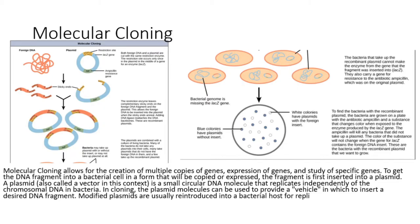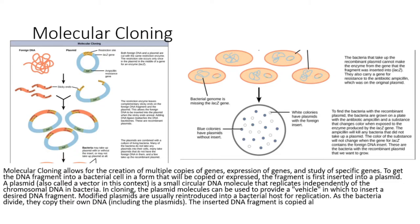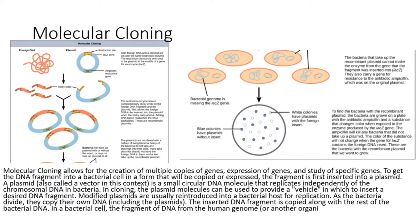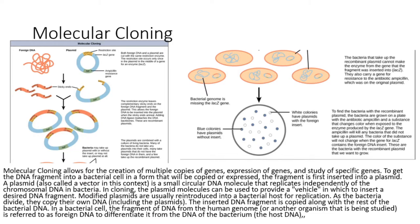A plasmid, also called a vector in this context, is a small circular DNA molecule that replicates independently of the chromosomal DNA in bacteria. In cloning, the plasmid molecules can be used to provide a vehicle in which to insert a desired DNA fragment.